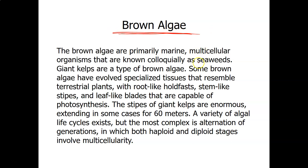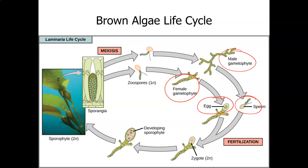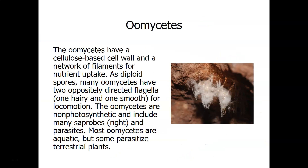Brown algae are mostly multicellular and are what we call seaweed — kelp is an example, and giant kelps can grow 60 meters tall. Kelps are very closely related to plants: their life cycle involves a sperm and egg, as well as a male gametophyte and a female gametophyte, which are haploid structures that produce the sperm and egg. This closely mirrors what we'll see in the plant life cycle.